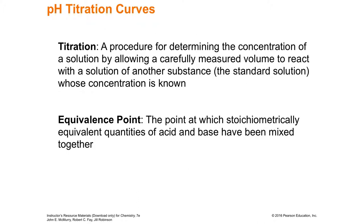Back to titration. Titration is a procedure — a lab technique — where you have a carefully measured concentration of something, usually the base, in a burette, dropped little by little into an unknown concentration of acid with a known volume. Then you measure the equivalence point, which is when all of the acid and all of the base neutralize into water. The purpose is to determine the concentration of your acid.